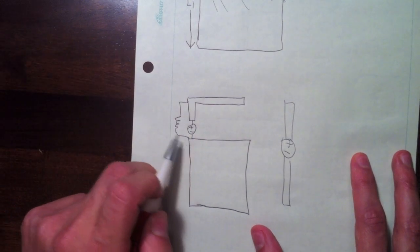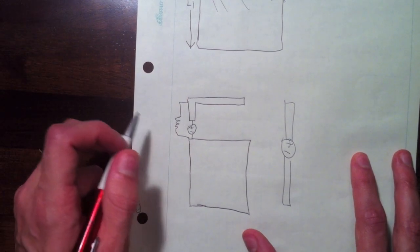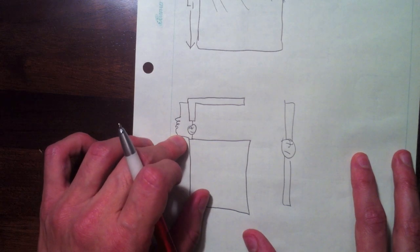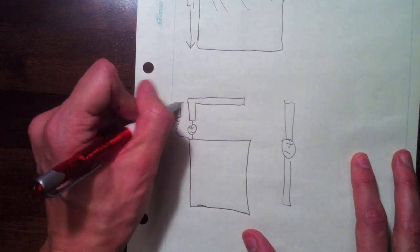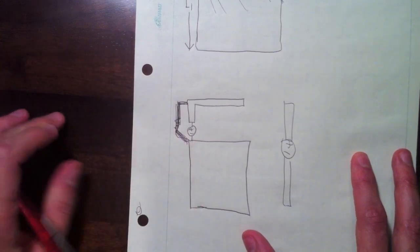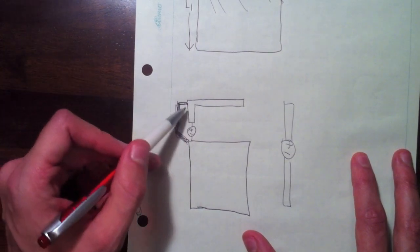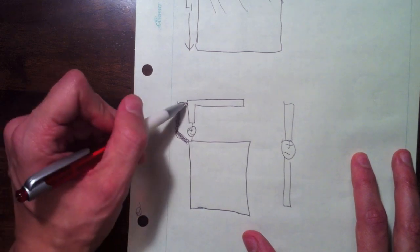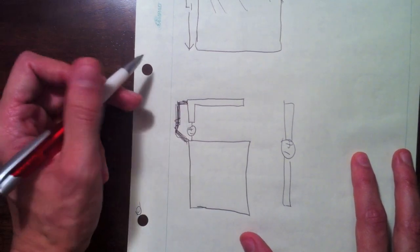Instead of putting a lumped inductor in there, because lumped elements, components, especially inductors, tend to have high loss, we'll just put a length of a thin trace of copper tape that goes from this base ground plane up to the top. And this will actually form an inductor.